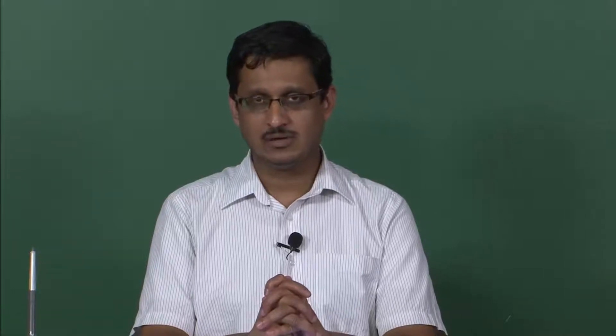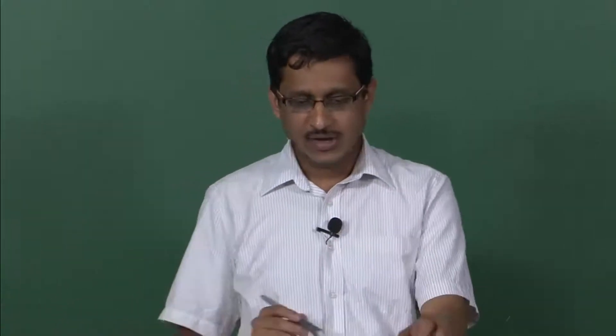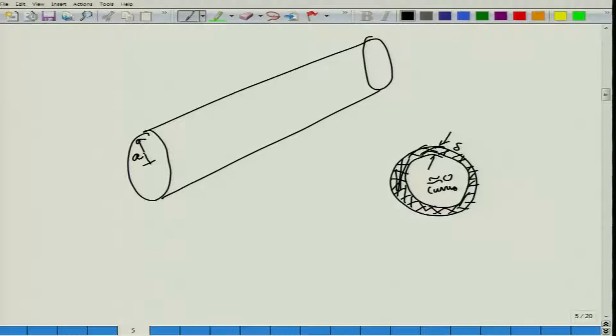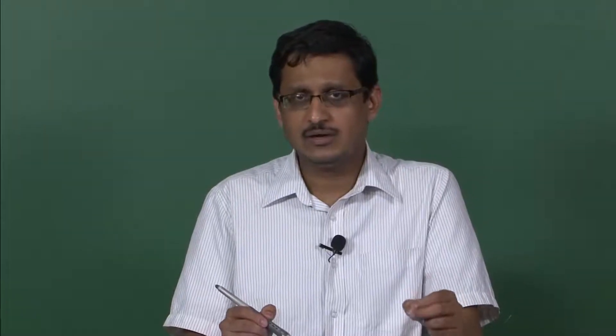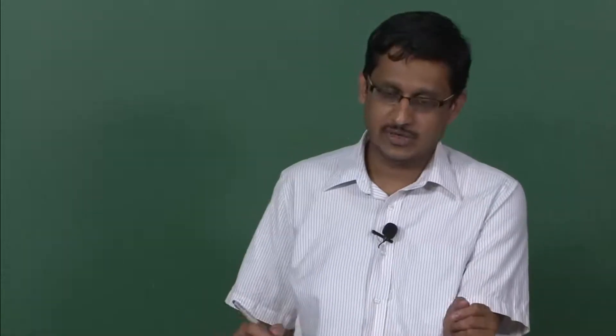We have already set up the preliminary problem statement in the previous module, so please refer to that one. We have a wire of radius A which carries a current J. Our goal is to see whether we are able to obtain the expression for the surface impedance Zs that we obtained for the case of a plane wave, and what about the values of R_INT and L_INT — whether those values will go to the familiar values in the limit when the frequency is made to zero.